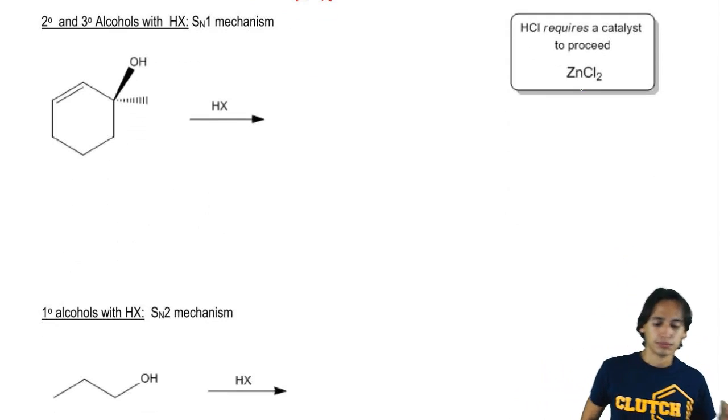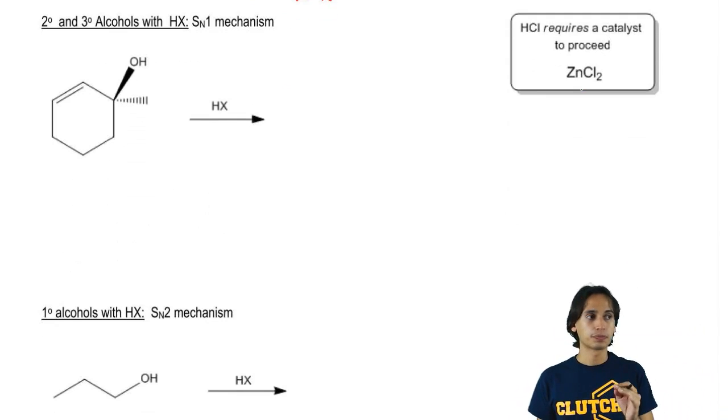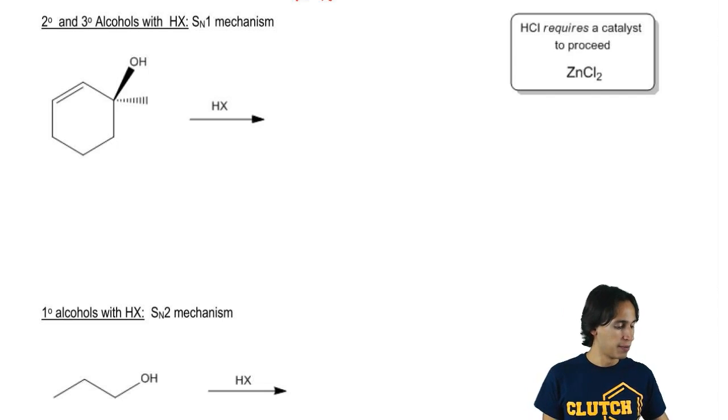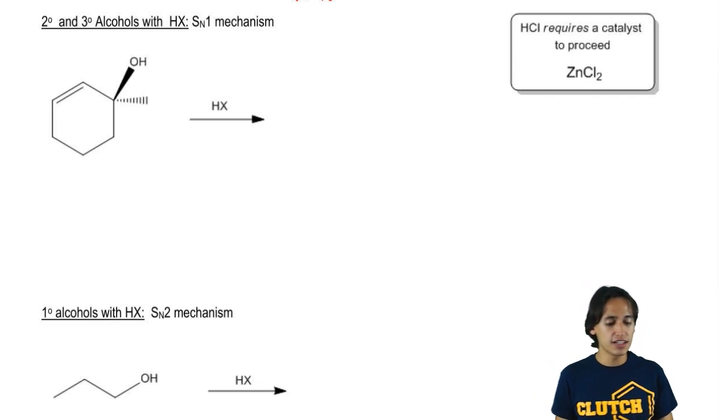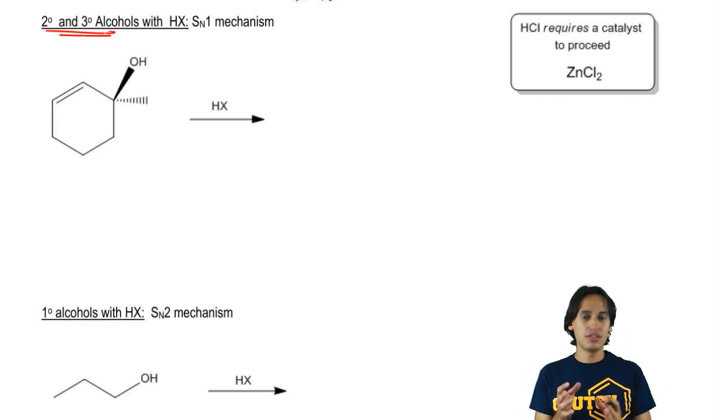It turns out that the degree of your alcohol is going to determine which method you use to turn it into an alkyl halide. And that has to do with the mechanism. The reagent might be the same actually, but the mechanism is going to be slightly different. So for a secondary or a tertiary alcohol, what's common to both of those is that they both make relatively good carbocations. If I were to kick the OH off somehow and make it stable and kick it off completely, I would get a carbocation that's pretty stable.